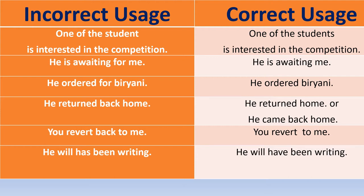'Revert back to me' is wrong — 'revert' itself means 'get back,' so you may not use the word 'back' again. 'You revert to me' is enough. 'He will has been writing' is wrong — the correct form is 'he will have been writing.' After 'will' we always use 'have.'